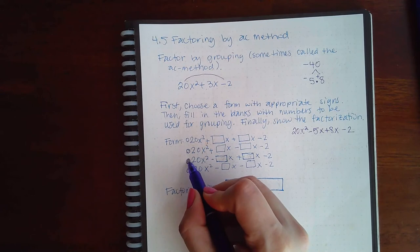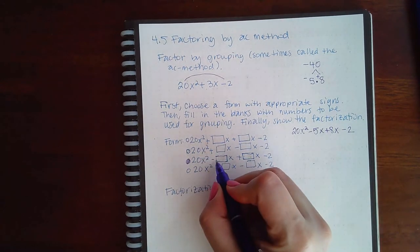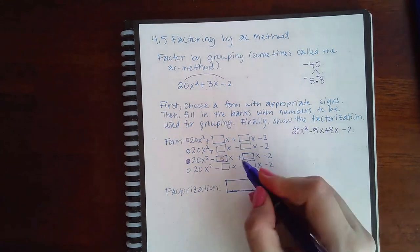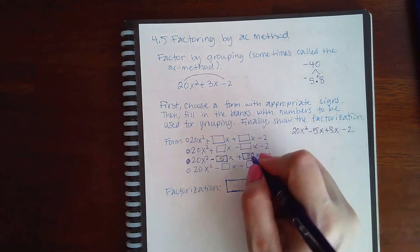That is this choice here, and then I'm just going to fill it in with the numbers I have. I have a negative 5, and then I have a positive 8, and those are the numbers that I would plug in there.